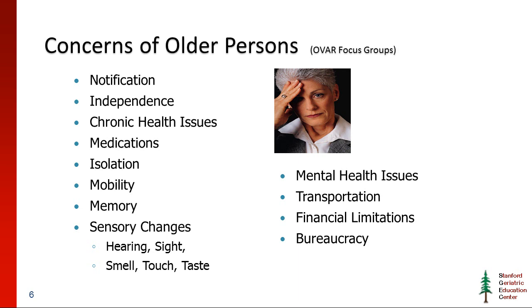I want to talk about our results from a series of focus groups we did a number of years ago with older persons — not just functional and access needs individuals, but a wide range of categories of older persons. These tend to be generic concerns. They worry about how they're going to be notified about an emergency and how they will maintain their independence. Many have chronic health issues, quite a few with multiple chronic conditions.